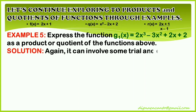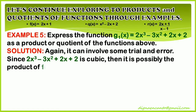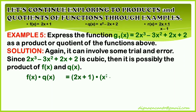For the solution, again it can involve some trial and error. Since 2x cubed minus 3x squared plus 2x plus 2 is cubic, then it is possibly the product of f of x and q of x.